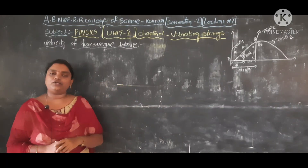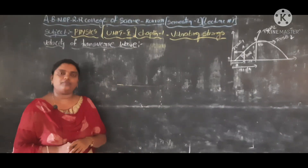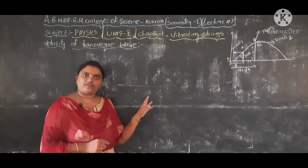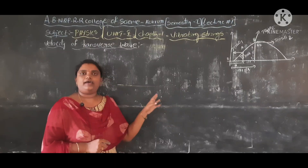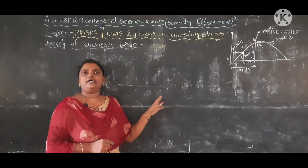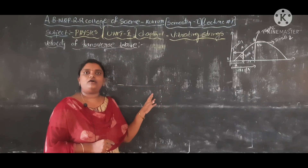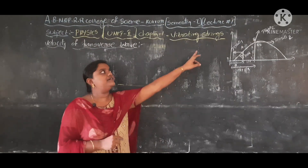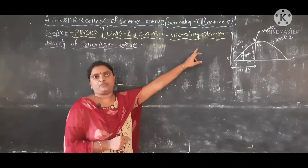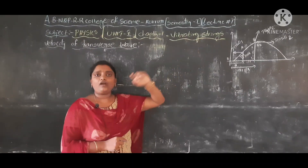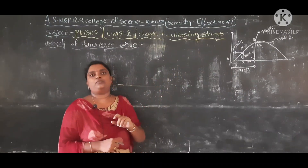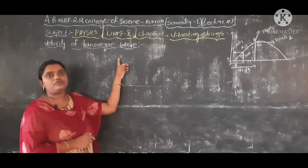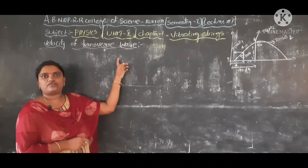So a string means: as compared to its diameter, it has a very large length, and it is flexible, elastic, and uniform. Such an object is called a string. A string produces transverse waves.